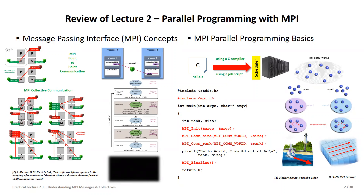The MPI broadcast takes one data item and ships it to all other processes inside a communicator. Then you have scatter, where different data is sent from one process to many. The opposite direction is gather — bringing data from many processes back to one. And the reduce command is a clever way of doing it where you already have operations built in, such as a global sum, making your code much more readable with simple operations like multiplication and addition already handled as part of the collective operation.